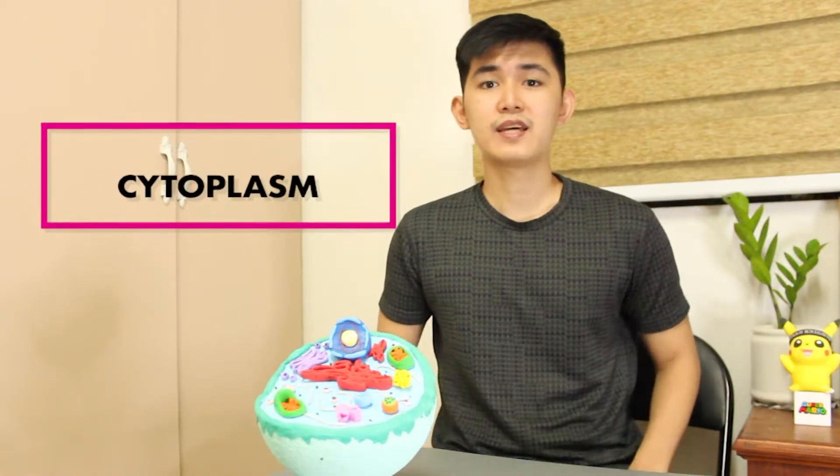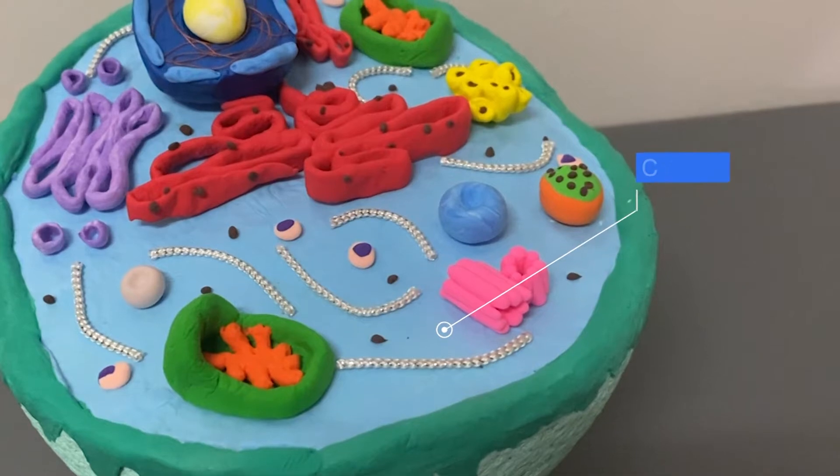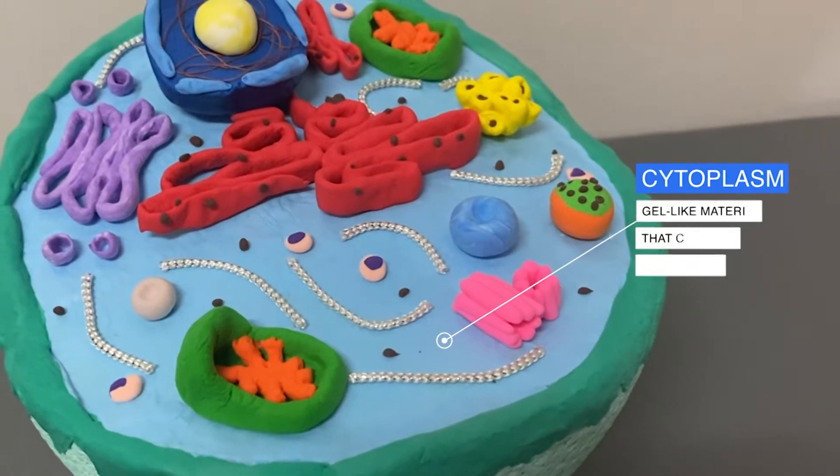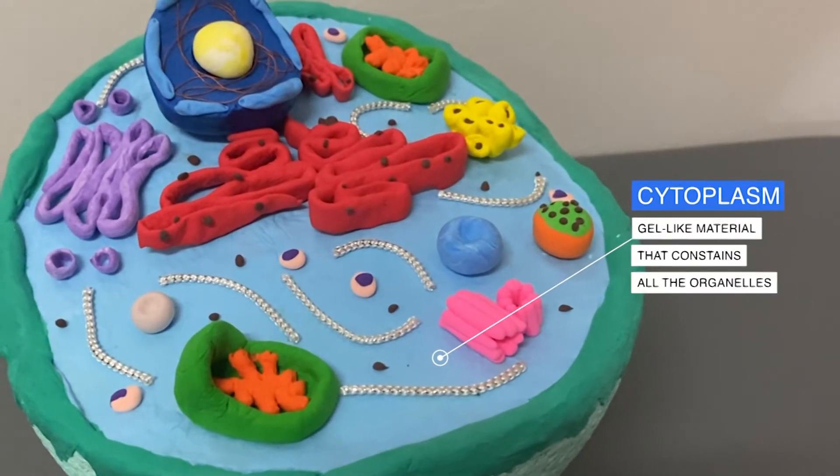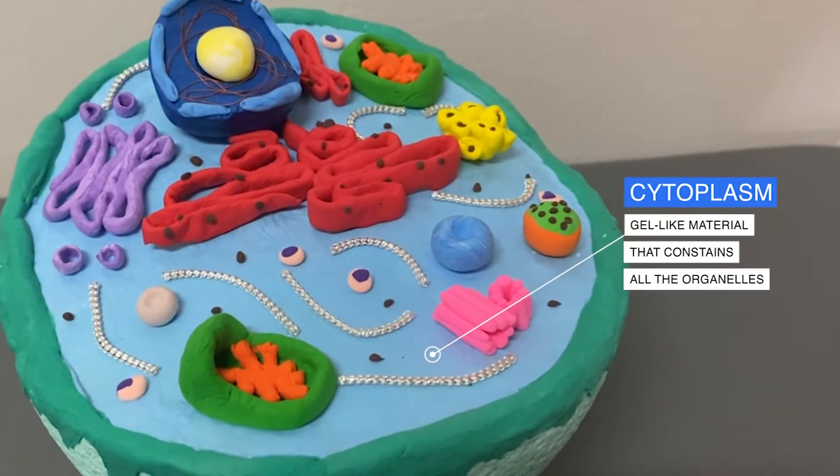Next is the cytoplasm. It is a gel-like material that contains all cell organelles enclosed within the cell membrane.